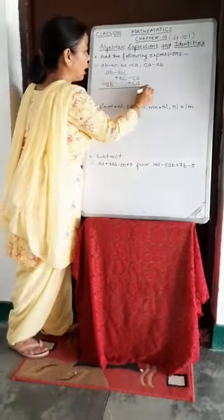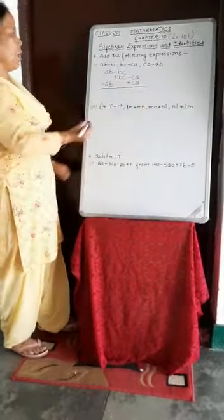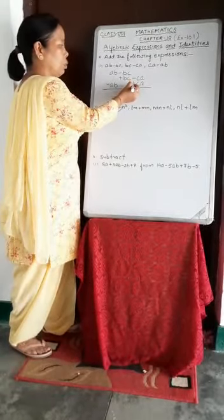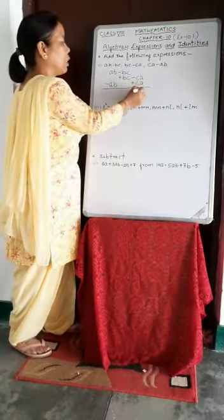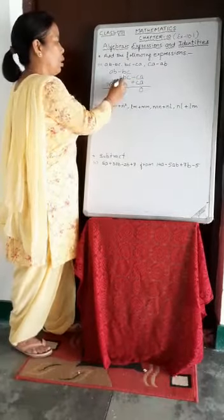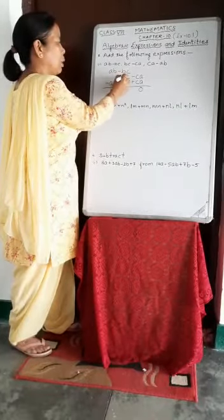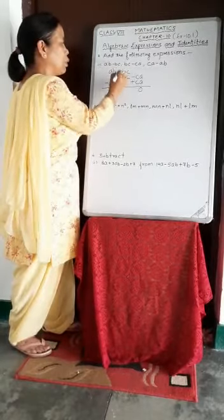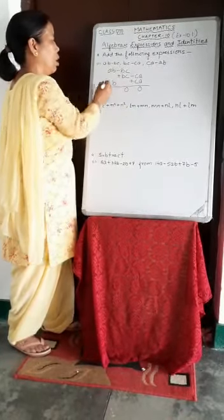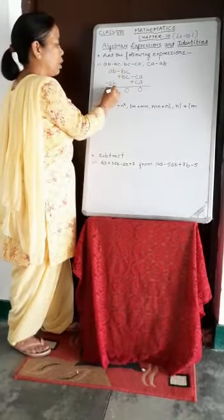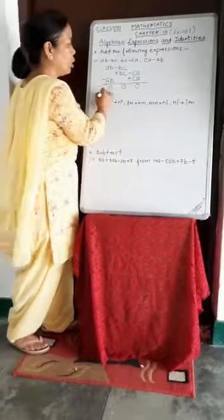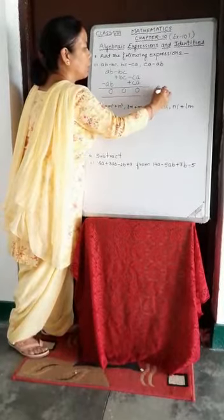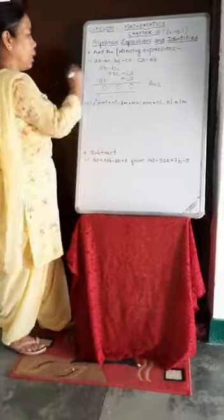Now we will draw a line and solve it. As we know, minus plus is minus. CA minus CA is 0. Similarly, minus BC plus BC is also 0, and AB minus AB is also 0. So the answer of this question is 0.